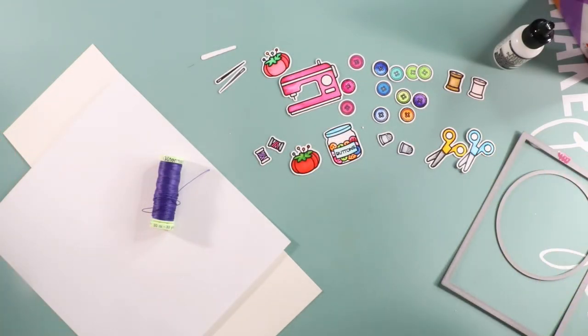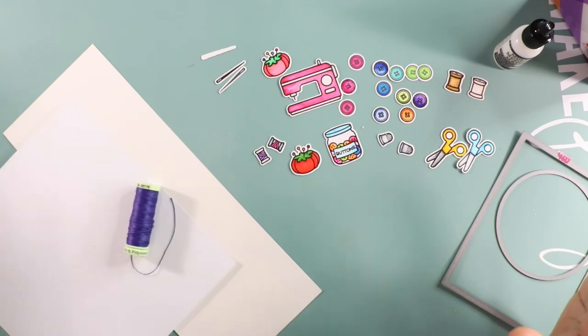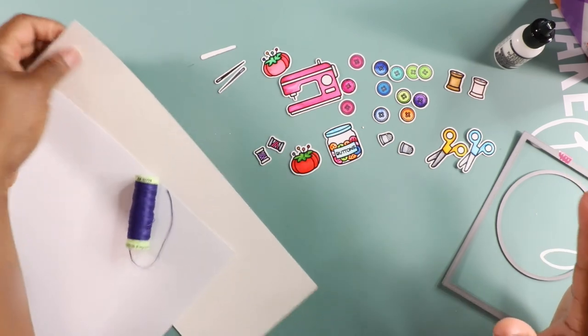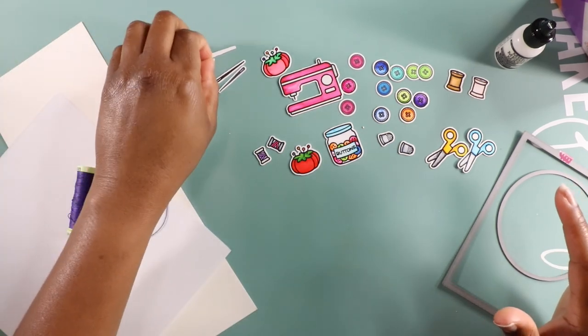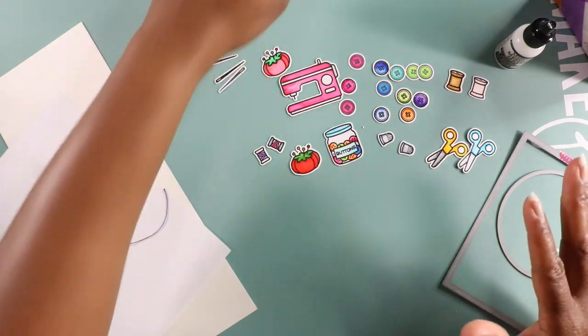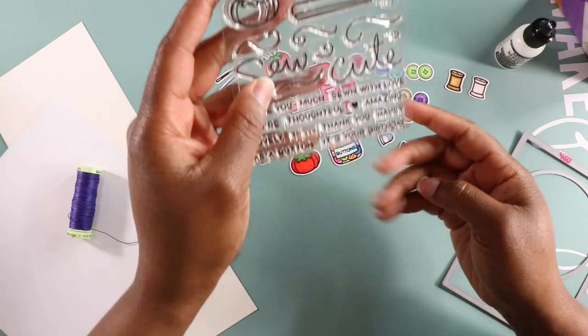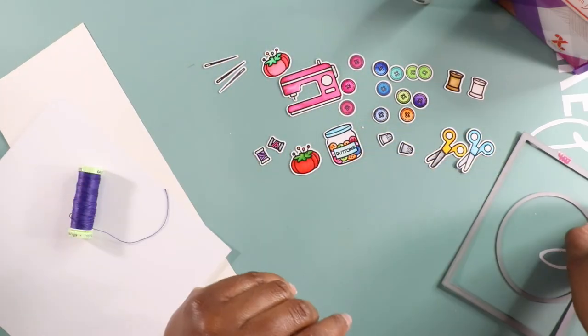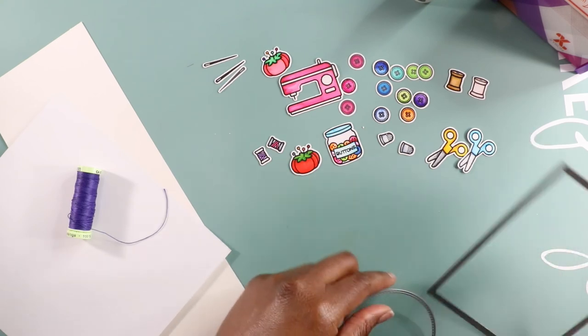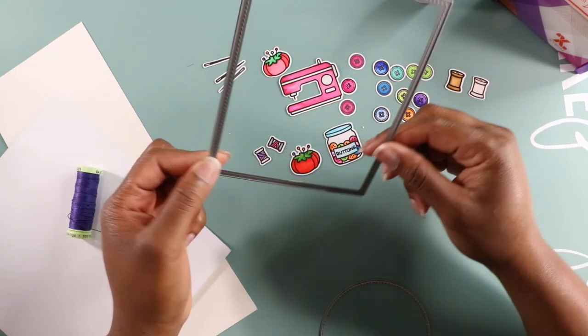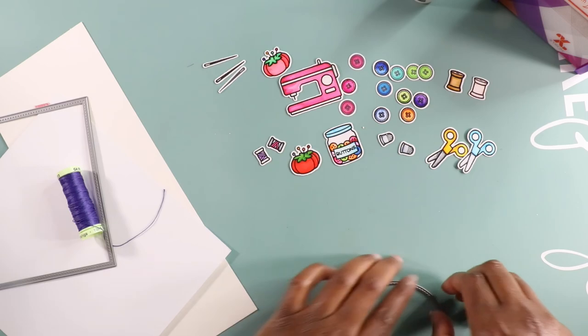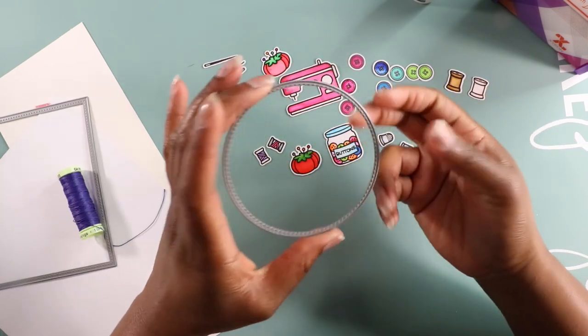So for this card I'll be using some white cardstock and then my card base. I have all of my images cut out and colored and these are from the Limefun sewn in love stamp set. For dies I am going to cut out my panel using the stitch rectangle and then I'll be using a round die as a stencil.